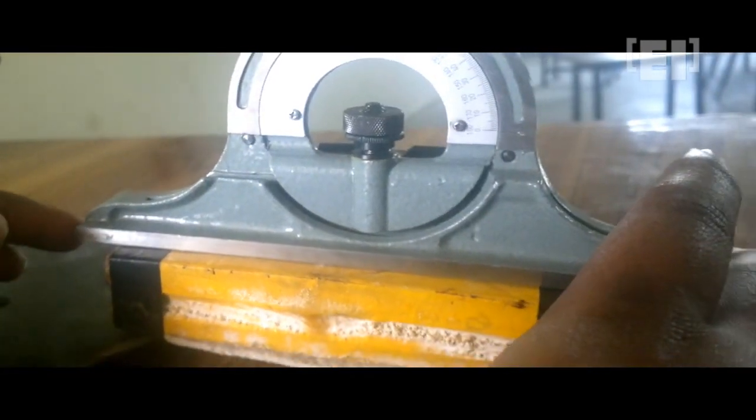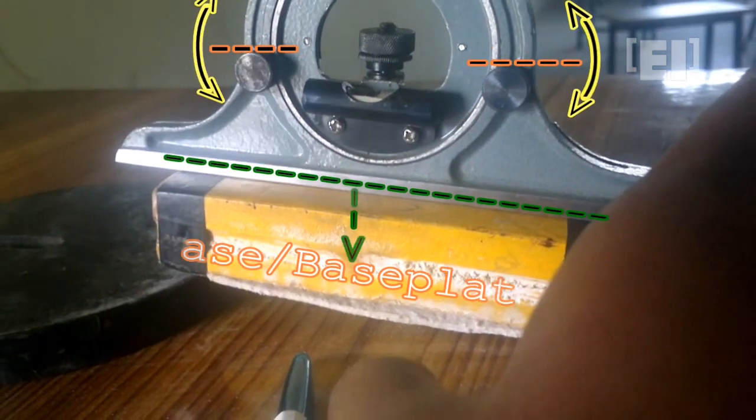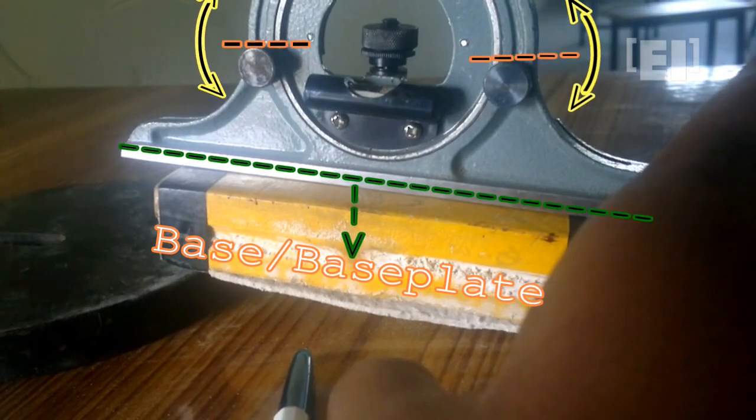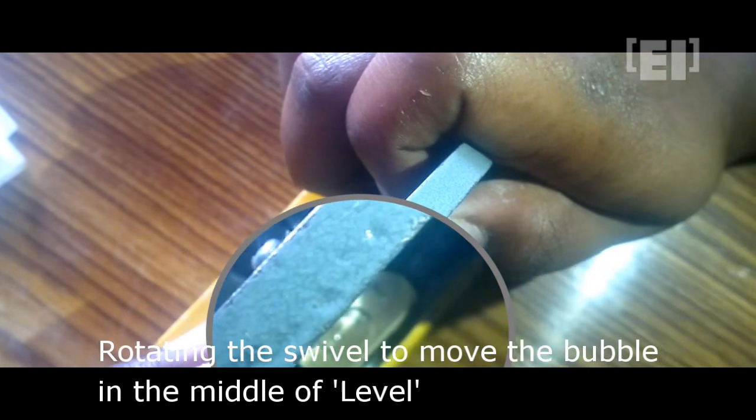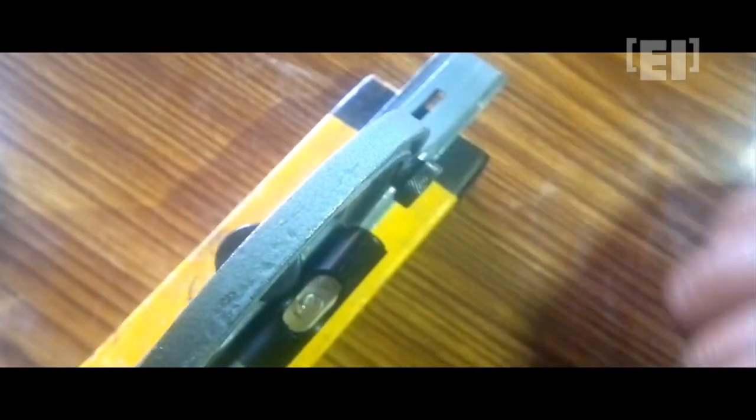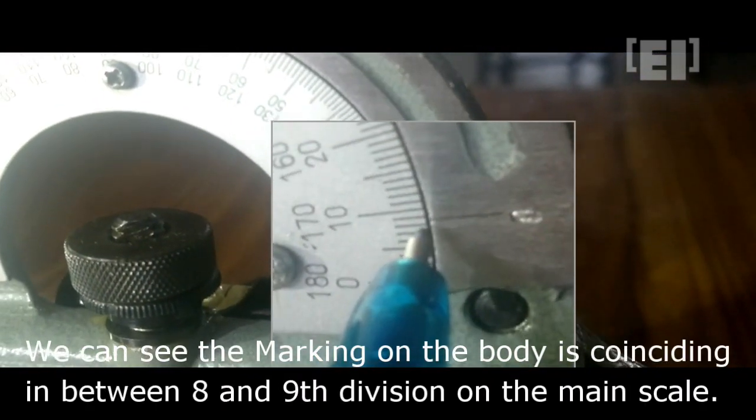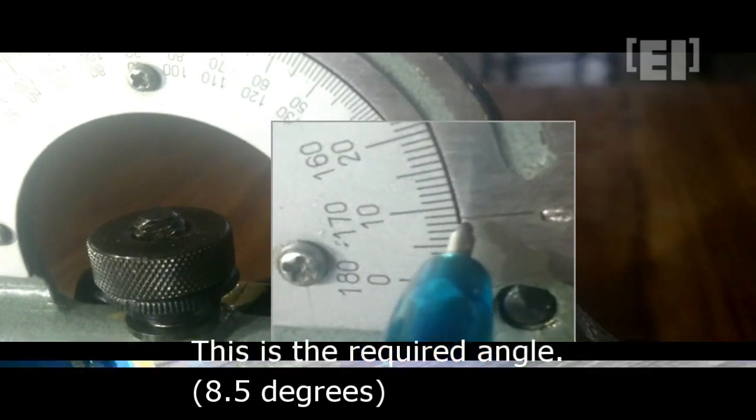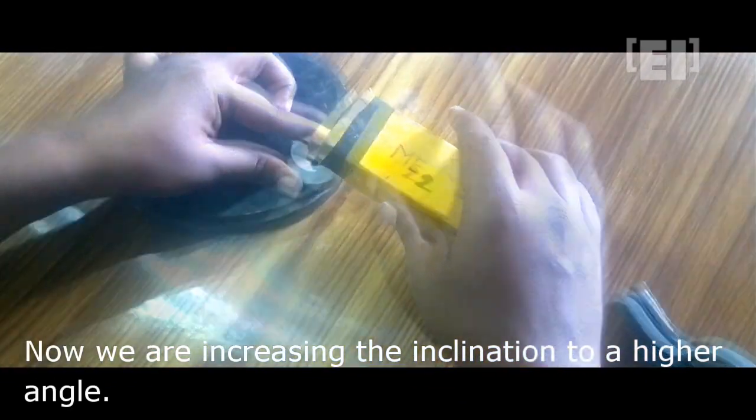After rotating the protractor, we'll be able to see the level. Rotate the swivel slowly to move the bubble into the middle of the level. All set. Now note down the division with which the marking coincides. This is the required angle. This time we are setting up a higher inclination.